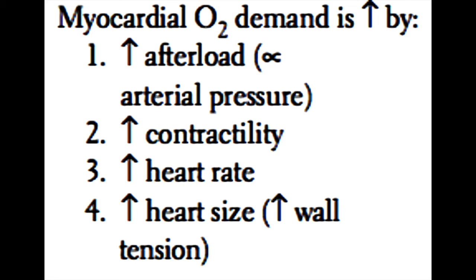Myocardial oxygen demand refers to how much oxygen the heart is using per minute. This is important because if demand outweighs supply, it can cause a heart attack. An increase in myocardial oxygen demand is caused by increased afterload — which is directly related to aortic or arterial blood pressure — as well as increased contractility and increased heart rate. Additionally, commonly seen in heart failure, an increased heart size also causes increased myocardial oxygen demand. This is due to the law of Laplace, which states that as heart size increases, the amount of wall tension also increases.